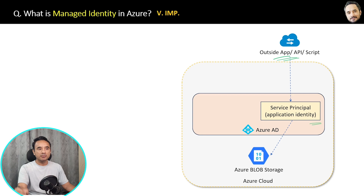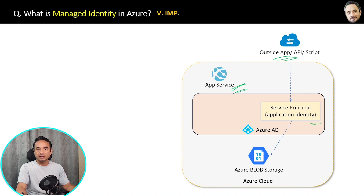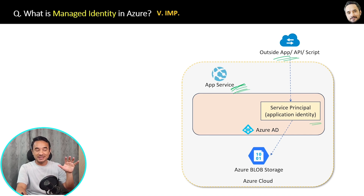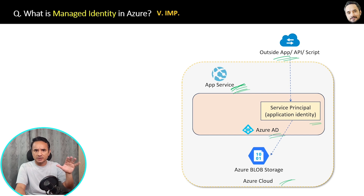Suppose inside your own Azure cloud there is an App Service where some app is running. Now if this App Service wants access to Azure Blob Storage, do we have to create a service principal for it too? Wrong. If the resource — this App Service — is inside the same Azure cloud account, there is no need to create a service principal. There is a shortcut way to do this without creating a service principal inside Azure AD.